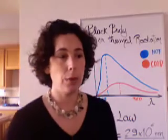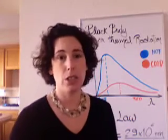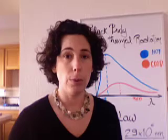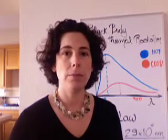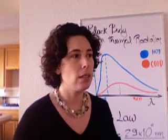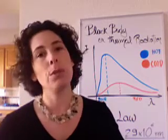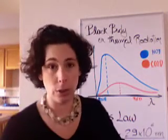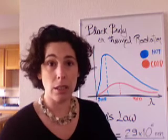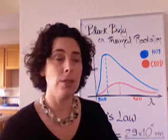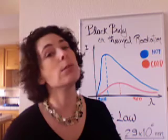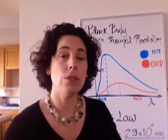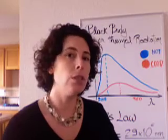We saw that when we accelerate a charged particle — an electron or a proton — it emits light. Objects of any given temperature are made of particles that contain electrons and protons that are being accelerated due to their kinetic energy. Therefore, these particles are moving around and emitting radiation. This is called thermal radiation, or black body radiation for historical reasons.